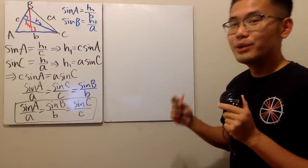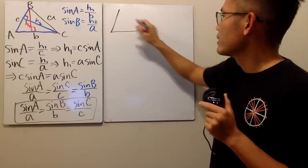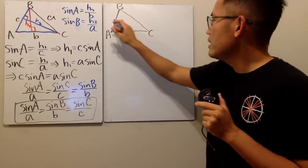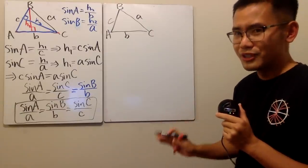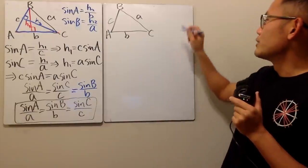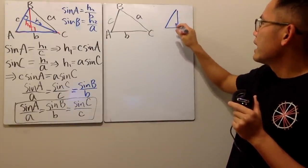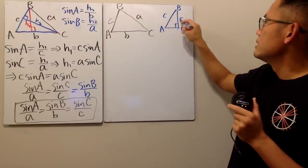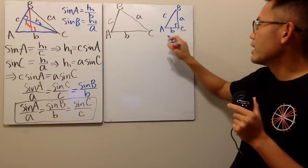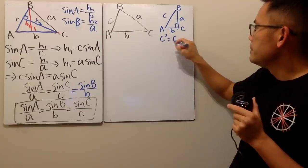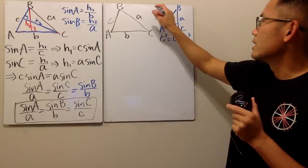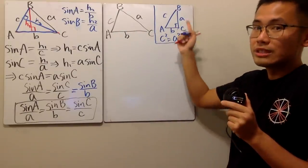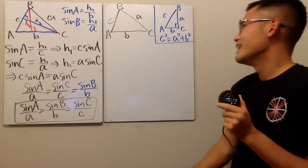Now we will be looking at the law of cosine. Let's go ahead and draw the triangle again with vertices A, B, C and sides little a, little b, and little c. The step is pretty much the same, but we have to use the Pythagorean theorem. As a reminder: if we have a right triangle with sides little a, little b, and hypotenuse little c, then c squared equals a squared plus b squared. This is the classic Pythagorean theorem — you can prove it over 100 ways without using law of cosine. The law of cosine is a generalized version of the Pythagorean theorem.